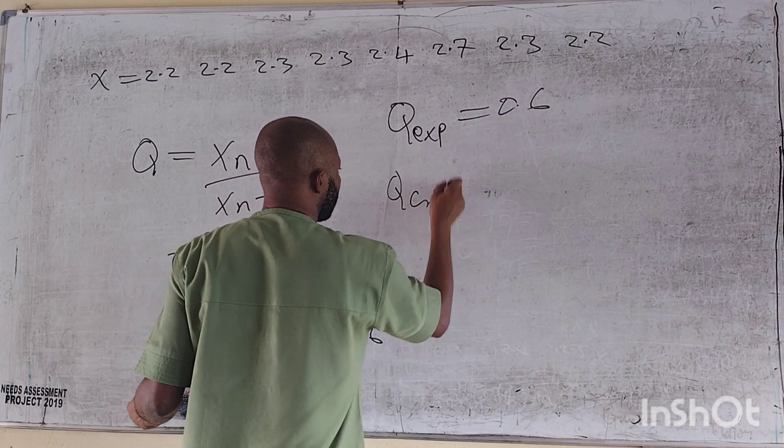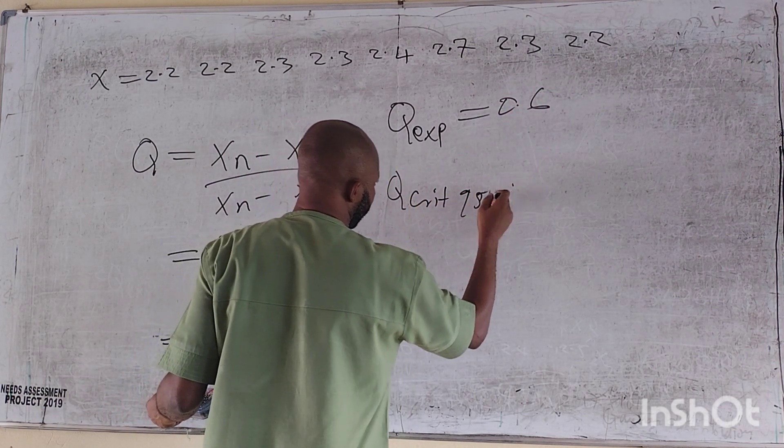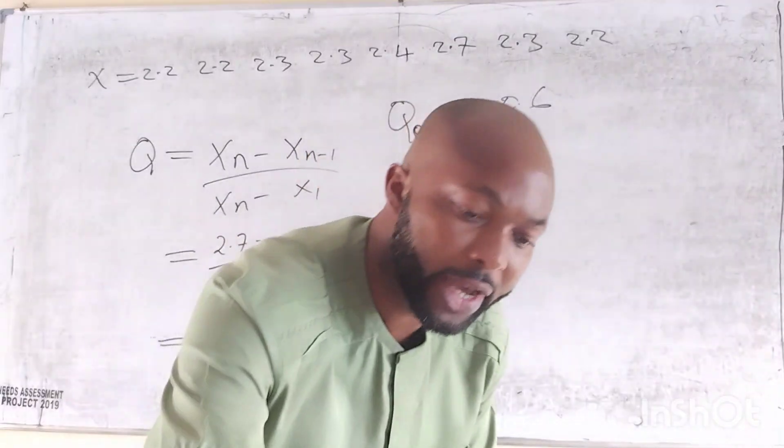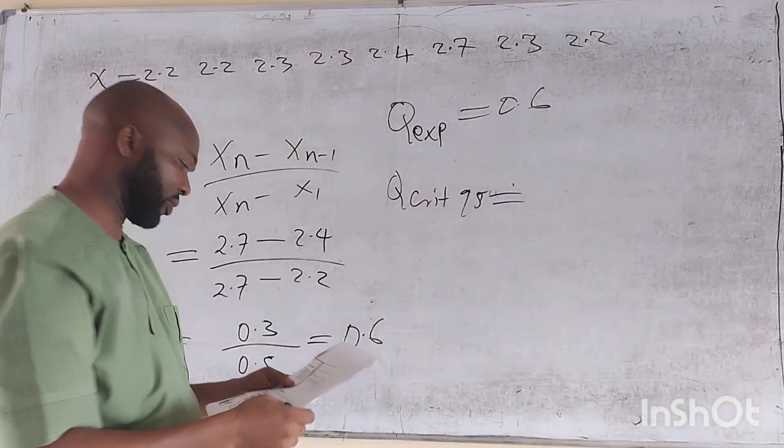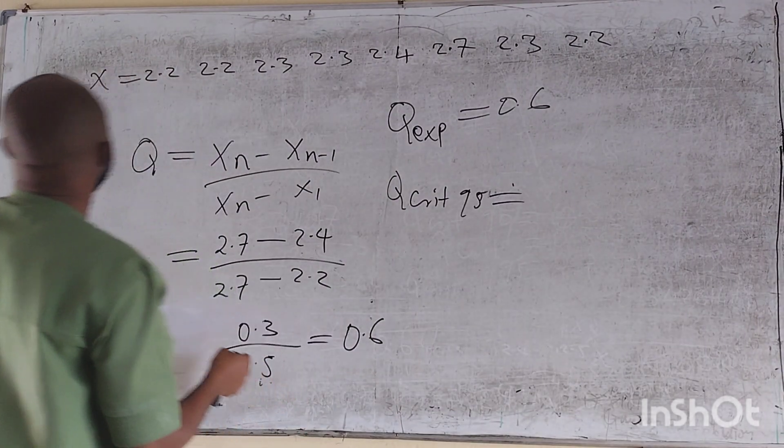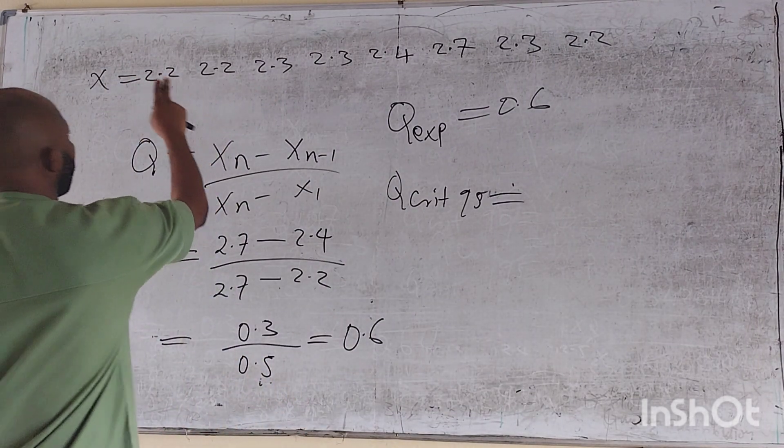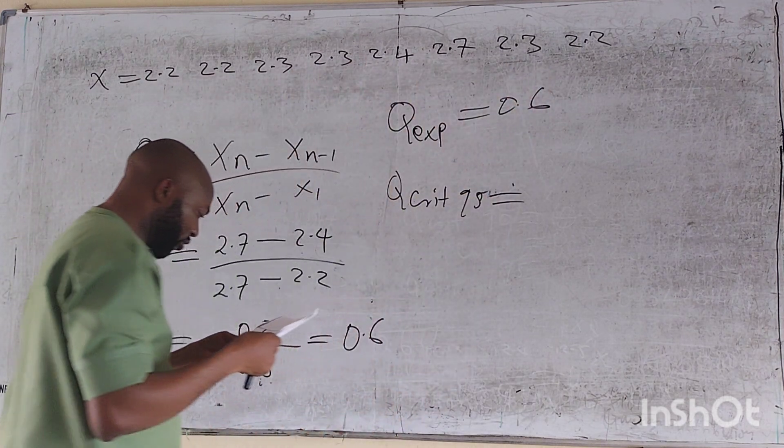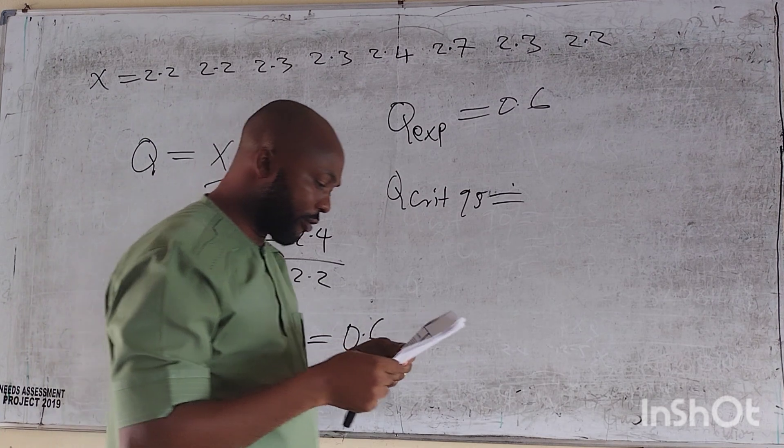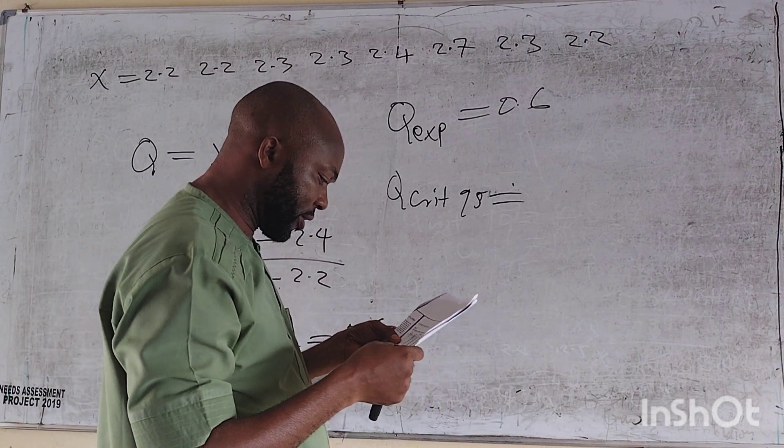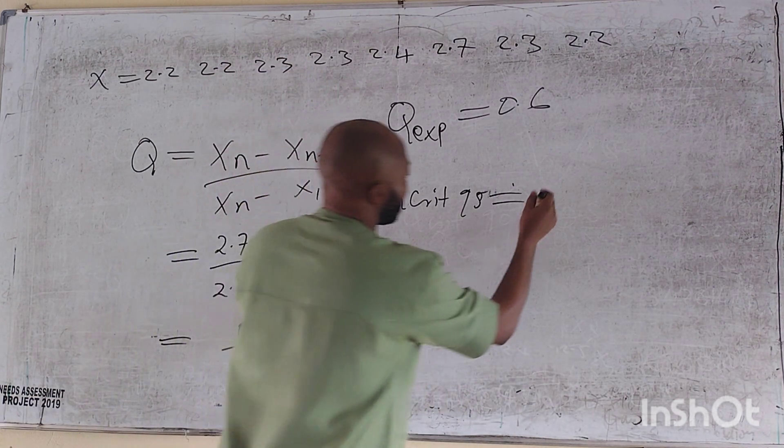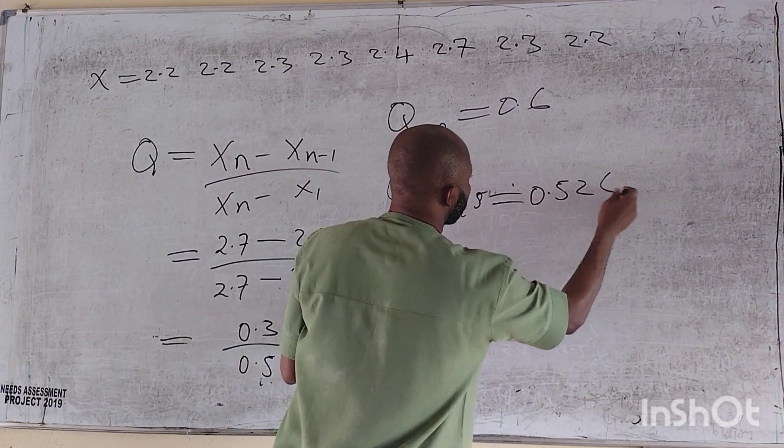And this is 0.3 divided by 0.5 is equal to 0.6. Now the Q-experiment is 0.6. Q-critical at 95 is equal to what? So I come down here again from this table. Now I have degree of freedom: 1, 2, 3, 4, 5, 6, 7, 8. I move down to 8. I have at 95, I have 0.526.